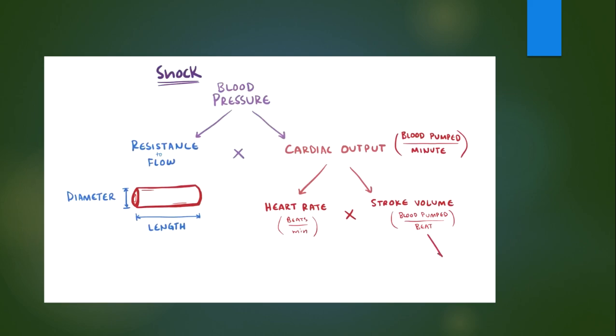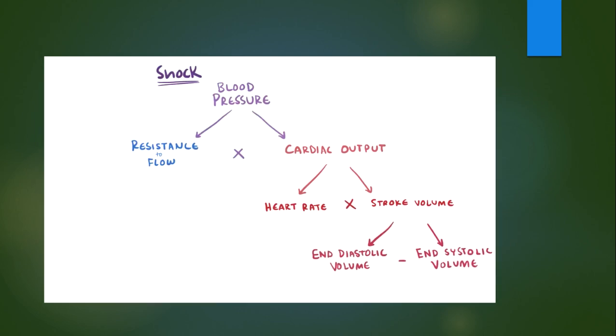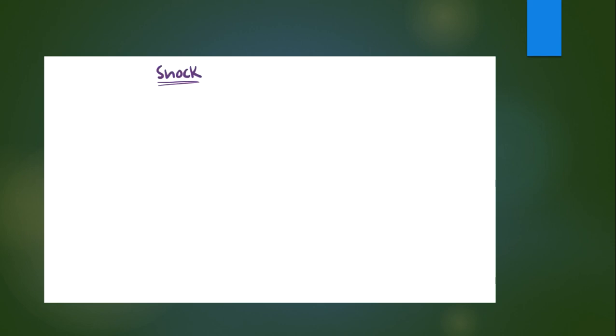Going even further, the stroke volume is found by taking the total volume of blood left over after contraction, the end systolic volume, and subtracting it from the total volume in the heart after filling, the end diastolic volume. Now keeping all those in mind, shock can be caused by a whole bunch of different things, but we can categorize the different types of shock into three main categories.